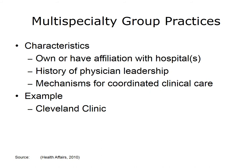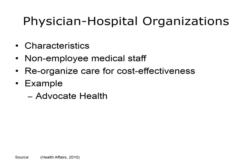The next three types of organizations that can form an ACO involve physician practices more centrally than many integrated delivery systems. For example, large multi-specialty group practices like the Cleveland Clinic have a history of physician leadership. Some have already developed mechanisms for coordinating clinical care, and some own or have strong affiliations with one or more hospitals. Physician Hospital Organizations combine hospitals and physicians not employed by the hospital to negotiate contracts and manage various clinical care components. Some, such as Advocate Health in the Chicago area, have begun to reorganize care to be more cost-effective and focus on quality and value, providing a strong foundation for building an ACO.